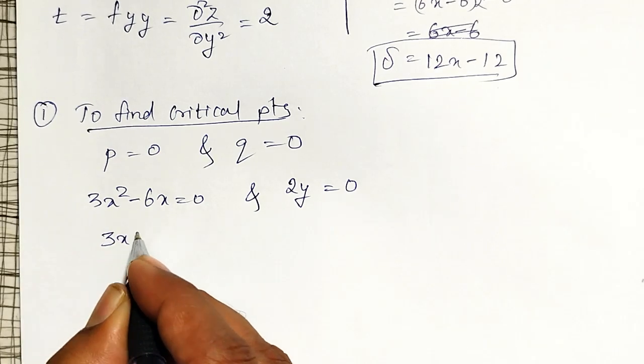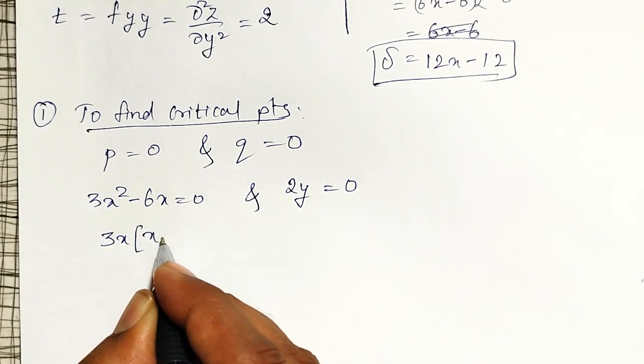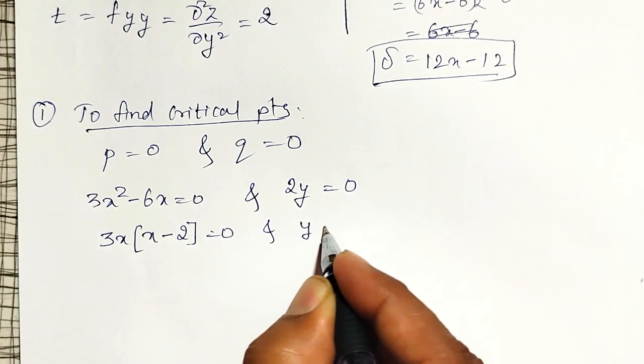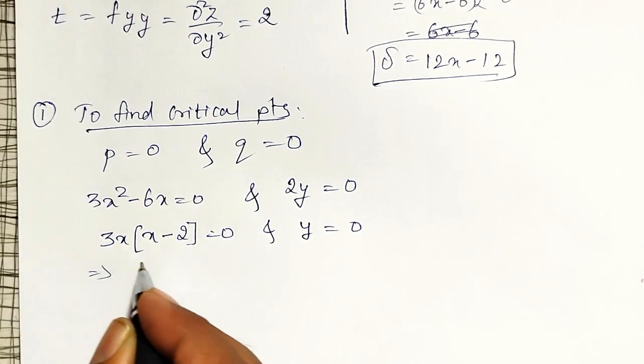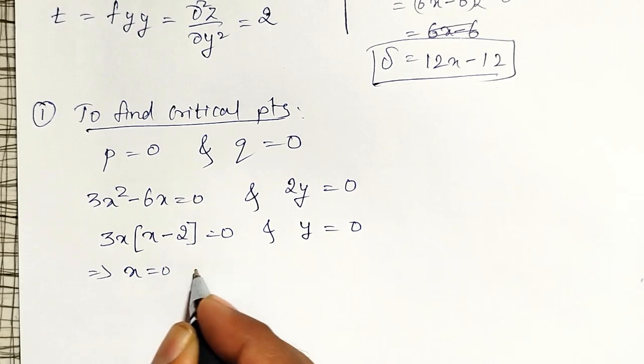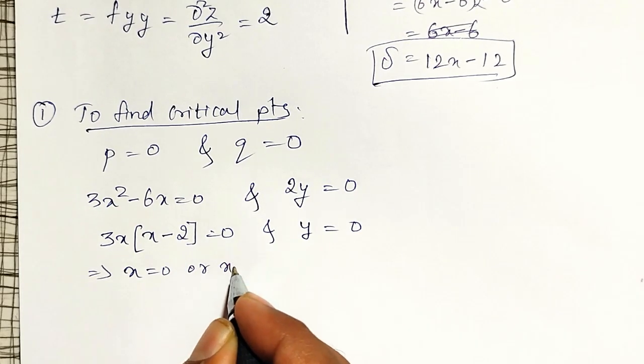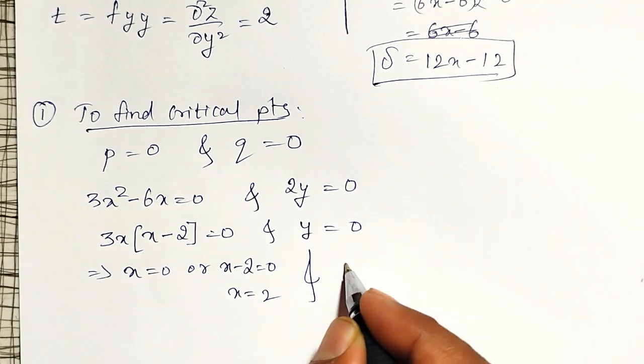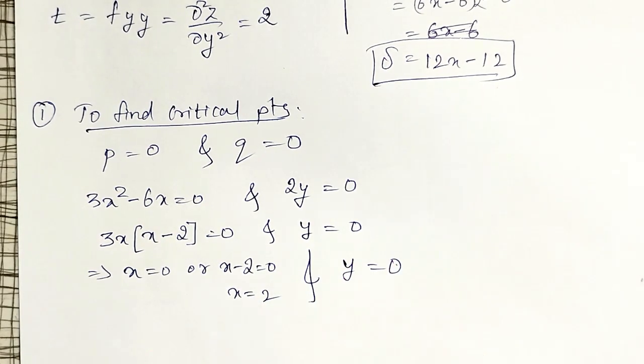For this one, 3x I can take common. Then we will get it as x minus 2 equal to 0. And here y equal to 0. Implies either x equal to 0 or x minus 2 equal to 0. That is x equal to 2. And y equal to 0.